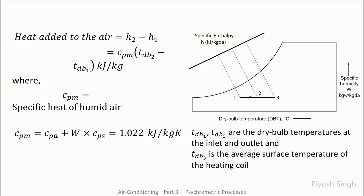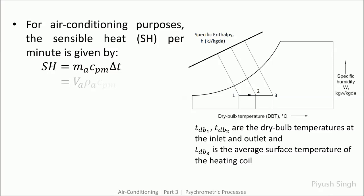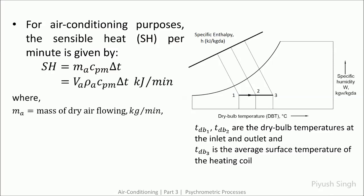The total heat added to the system is the difference in enthalpy between the outlet and the inlet, which is equal to the specific heat multiplied by change in temperature. CPM is the specific heat of moist air per unit mass, usually taken to be 1.022 kJ per kg·K. Here is an expression for the sensible heat added per minute.